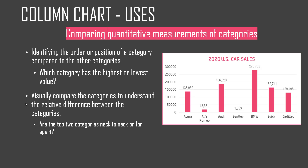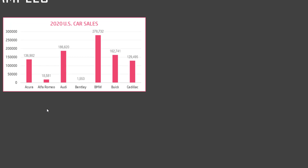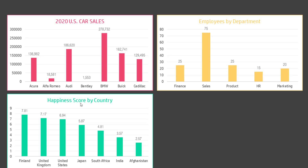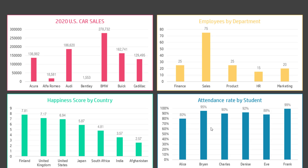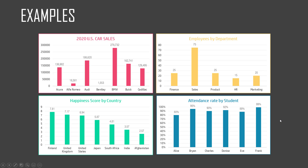Now let's take a look at some more examples. We already saw the US car sales example, so let's look at something different. For example, the number of employees by department — the columns represent the number of employees in each department, so department is the categorical variable. We can also look at happiness score by country, where country is the category. We can also see attendance rate by student, where each student's name is on the axis and their attendance rate is displayed. These are just some examples to illustrate how the column chart can be used.